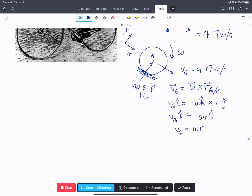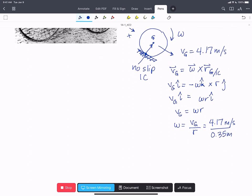We can calculate omega here equal to VG over R equals 4.17 meters per second over our radius 0.35 meters. And that gives us 11.91 rads per second.